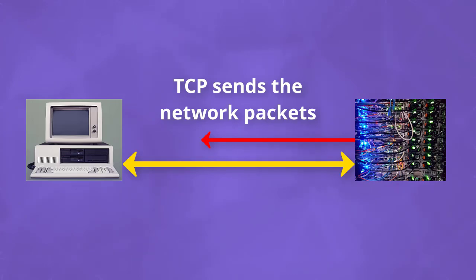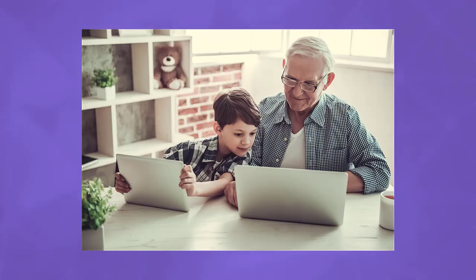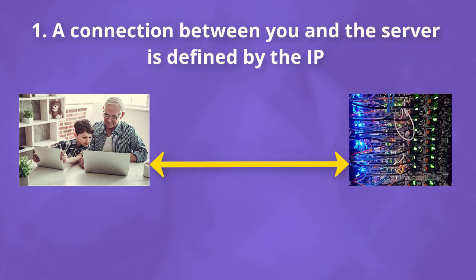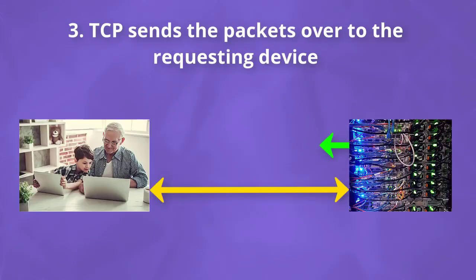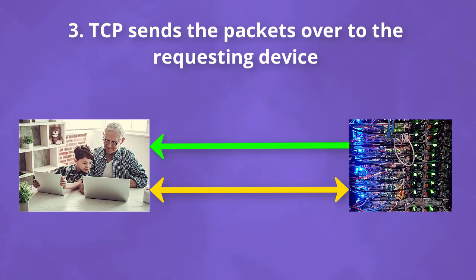It works like this. Let's say you want to open up a web page on your computer. A connection between you and the server is defined by the IP. Then the TCP chops up that web page into a number of different small chunks and sends them over via packets. Your computer can then read these packets and form the final web page.